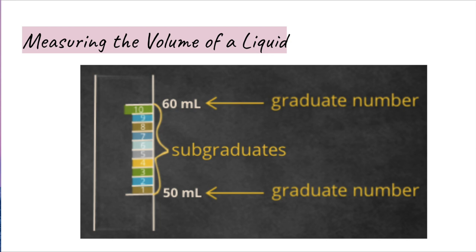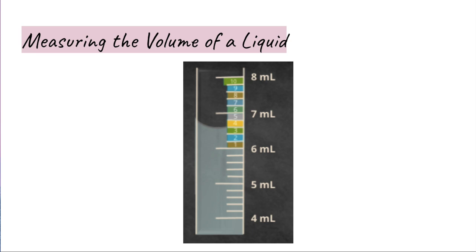To read a graduated cylinder, you must know the value of each measuring line. For example, in a 100 mL graduated cylinder, there are 10 subgraduates between 50 and 60, so the value of each subgraduate is 1 milliliter. In a 10 mL graduated cylinder, there are 10 subgraduates between the 6 mL and 8 mL marks. The difference is 2 mL, so dividing 2 by 10 gives 0.2 mL per subgraduate. Just like with length and temperature, scientists estimate the last digit by visually dividing the space between the smallest marked lines.